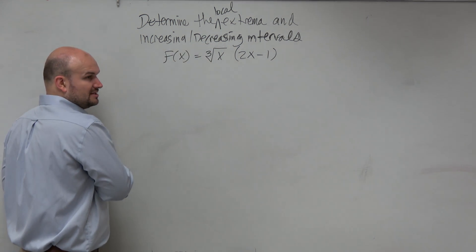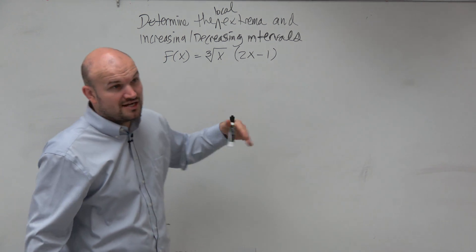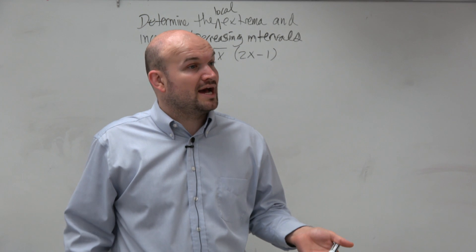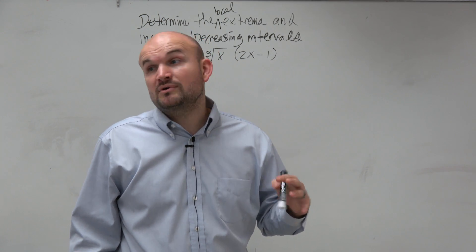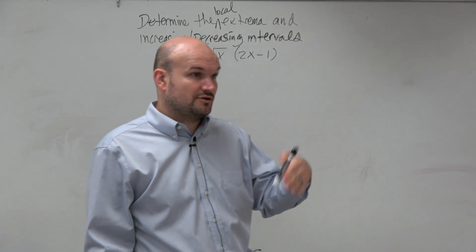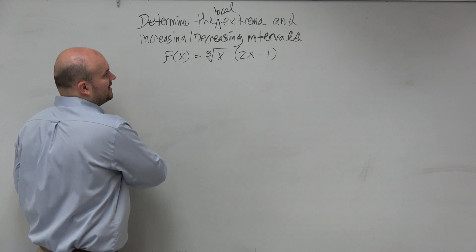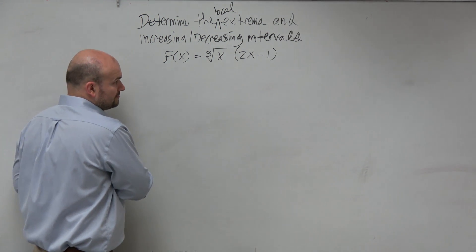We know the derivative is going to be continuous and all values are in its domain. And we also kind of looked ahead as far as the first derivative and know that we're going to have one critical value, at least at 0, because that's going to create a vertical tangent. But let's go ahead and find a derivative.